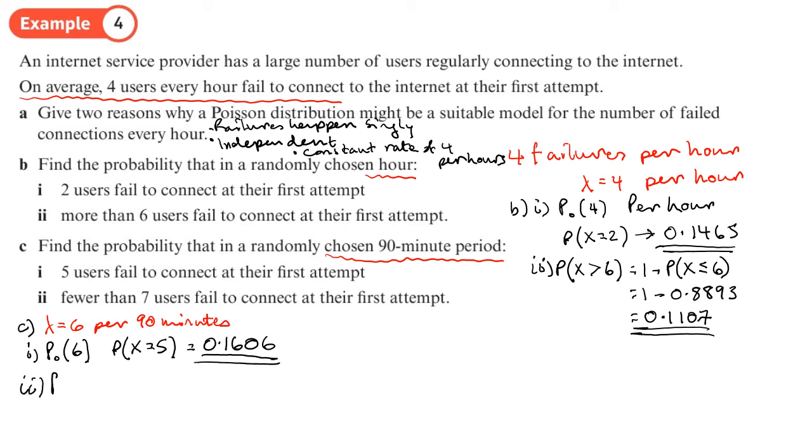And the last bit here, it's still six failures in a 90 minute period. Fewer than seven users. Now it doesn't say seven or less. Fewer than seven is going to be less than seven, does not include seven, which is basically the probability up to six.